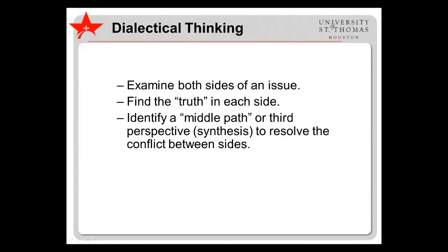A particularly sophisticated form of synthesis involves finding the truth in both sides of an issue, then identifying a middle path, compromise, or a third perspective — bringing in a different framework for understanding the issue. This is part of dialectical thinking. Although this is not a required part of a literature synthesis, it can be helpful to think about what each side of an issue is missing, as this could point the way to new insights.